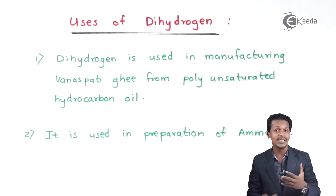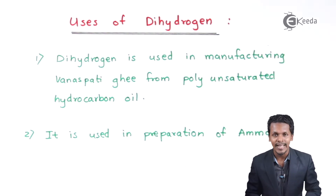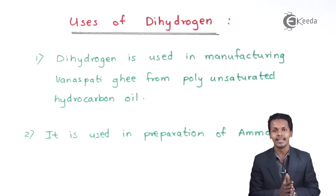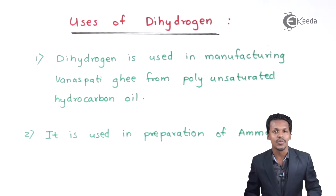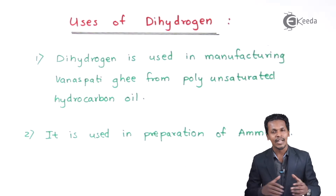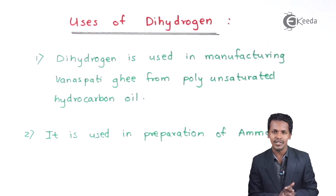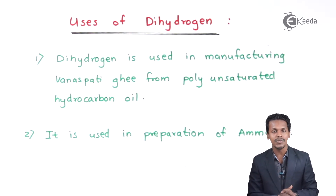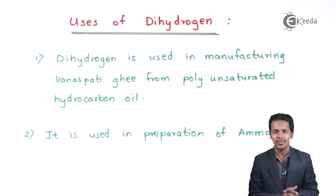For example, urea consists of NH₂ groups and can be prepared with the help of ammonia, which in turn is prepared from nitrogen and hydrogen. This is how hydrogen plays a very vital role in making fertilizers as well as in preparing ammonia, and there are also various other applications and uses of hydrogen.